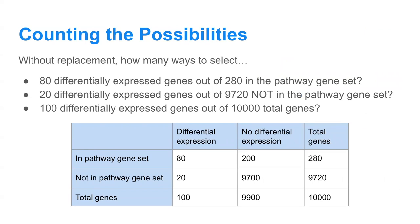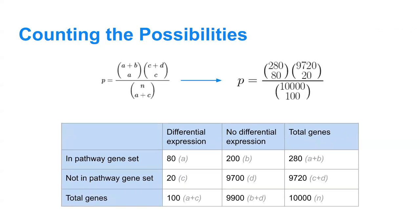That's why you need this formula. The logic behind it is asking, without replacement, how many ways are there to exactly see the data we got? How many ways are there to select 80 differentially expressed genes out of 280 that are in the pathway gene set? And how many ways are there to select 100 differentially expressed genes out of 9,720 that are not in the pathway gene set? And also, how many ways are there to select 100 differentially expressed genes out of 10,000 total genes? Those questions are shown in the formula, and you can plug those numbers directly in to compute your statistic.